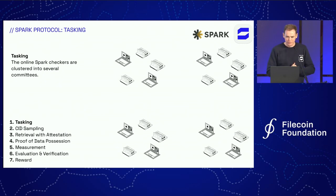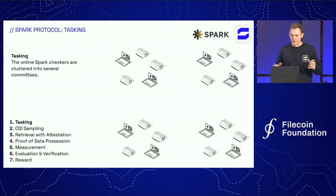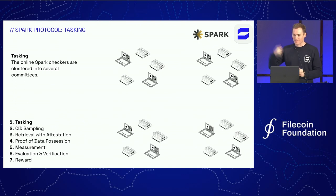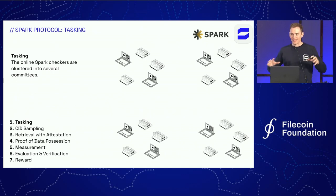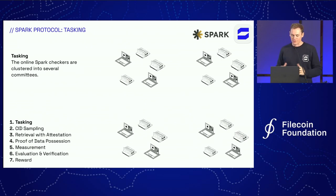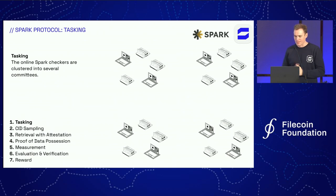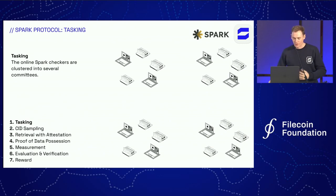I'm going to briefly run through an outline of the Spark protocol. The first thing we want to do is gather all of these Spark checkers into committees, because we can't trust a single Spark checker to make a retrieval, report it, and just trust their result. We have to have a committee of Spark checkers making the same retrieval and come to some consensus about the result. We also need to prevent Spark checkers from choosing their own committees, because someone might be able to control a whole committee. Using DRAND for randomness, we have a deterministic algorithm which puts Spark checkers into these committees so they can't choose it themselves, and there are enough in each committee that it becomes very difficult for people to own a whole committee or hold a majority.